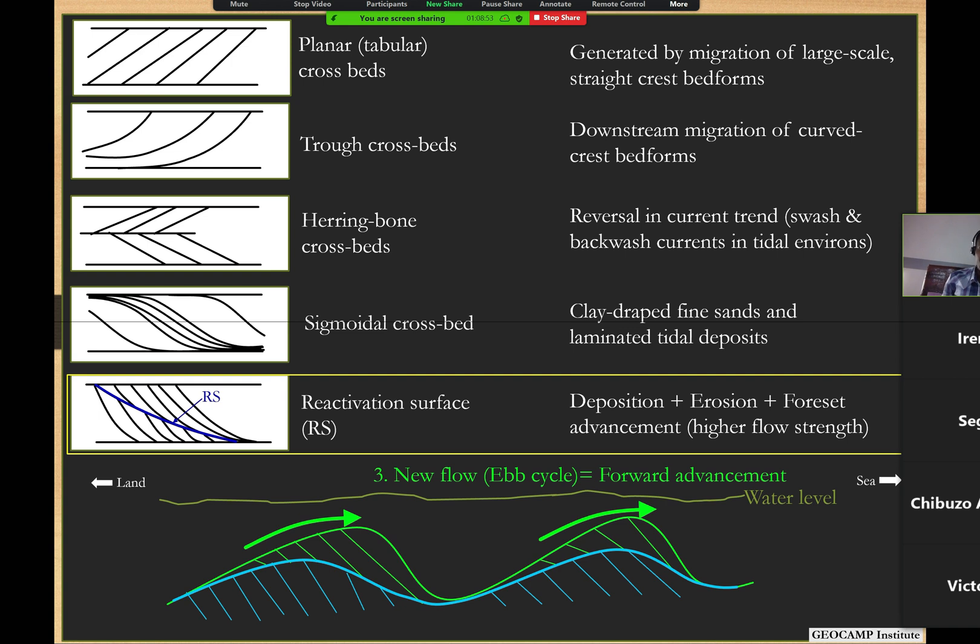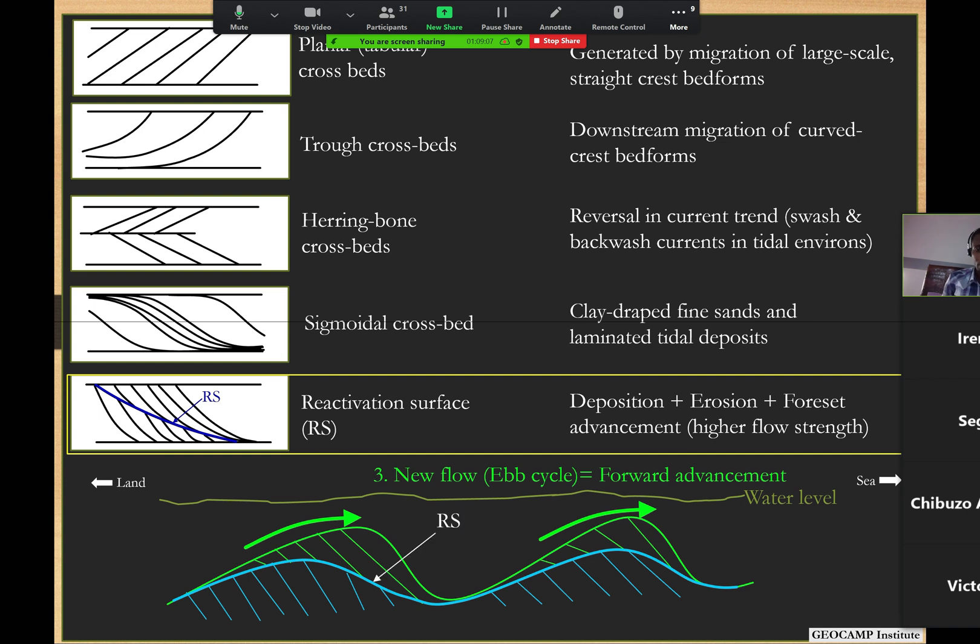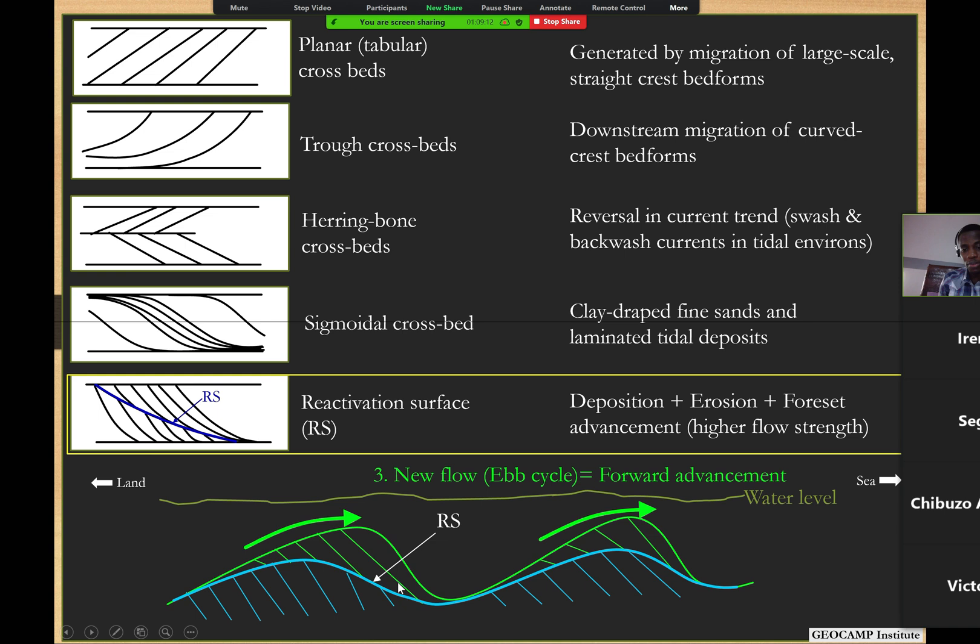They're separated by what you actually see clearly as bedding surfaces or bedding planes. When that happens, the surface separating both of them is what's called a reactivation surface.